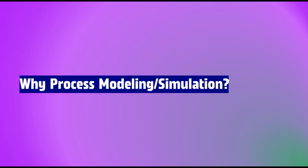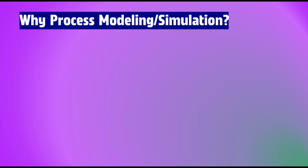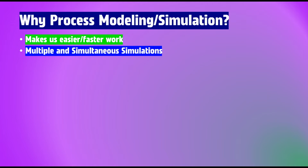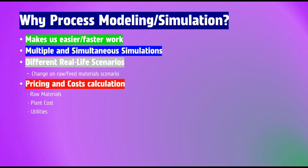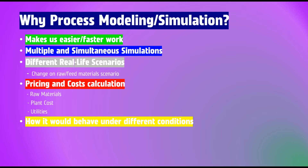I want to answer these questions and introduce Aspen Plus software. First question: why process modeling or simulation? Number one, it makes work easier and faster. Number two, it enables multiple and simultaneous simulations. Number three, different real-life scenarios — for example, changes in raw or feed material. Number four, pricing and cost calculation — for example, raw materials, plant costs, and utilities.